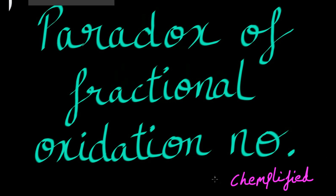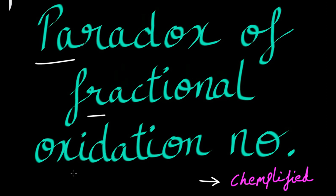Hey guys, this is Amplified and today we will talk about the paradox of fractional oxidation number. Paradox simply means contradiction — a contradiction to itself. We already know that oxidation numbers are never fractional, but there are some molecules in which after calculating the oxidation number you will find that the oxidation number is in fraction. This is the paradox of fractional oxidation number.